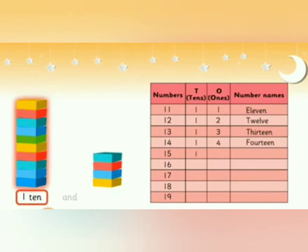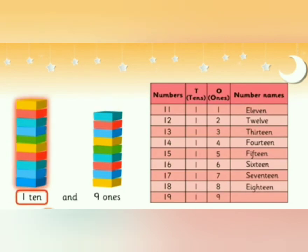One ten and five blocks, fifteen. One ten and six blocks, sixteen. One ten and seven blocks are seventeen. One ten and eight ones means eighteen. One ten and nine ones, that is nineteen.